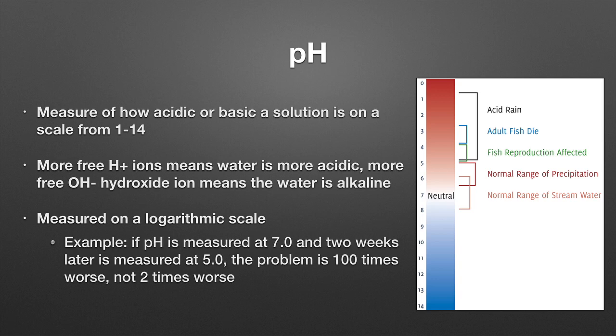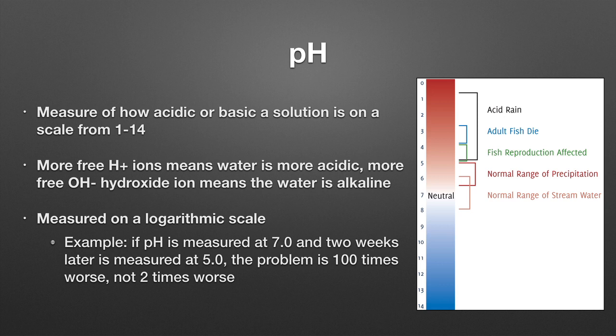pH is also really important — it's a measure of how acidic or basic a solution is. The more free hydrogen ions in the water, the more acidic it is. Nitrification — that conversion of ammonia to nitrate — produces a lot of hydrogen ions, which is constantly driving our pH down. One really great example: if you have a pH of seven and two weeks later measure your pH at five, the problem is 100 times worse, not two times worse — because pH is a logarithmic scale. So when you're changing or adjusting your pH, that's really important to take into consideration.